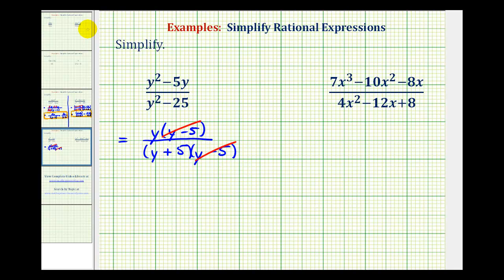y minus 5 over y minus 5 simplifies to 1, so we're left with a numerator of y and a denominator of y plus 5. We could drop these parentheses if we want to, but we cannot simplify this y and this y because of the addition. This is our simplified rational expression.